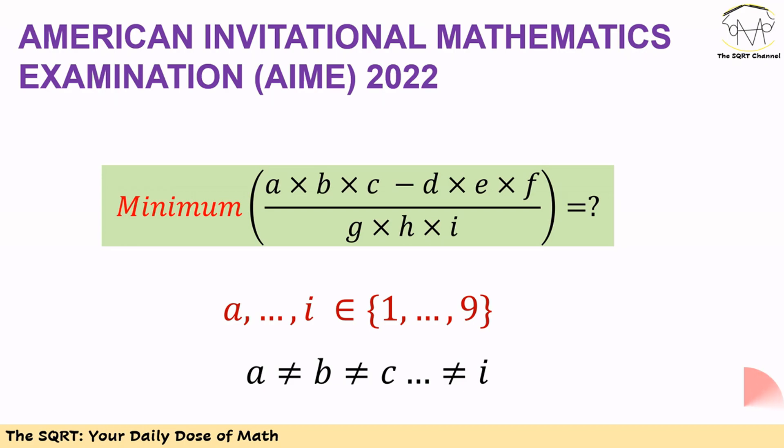In this problem we have distinct integers A, B, C, and so on, and they are going to be between 1 and 9 inclusive.